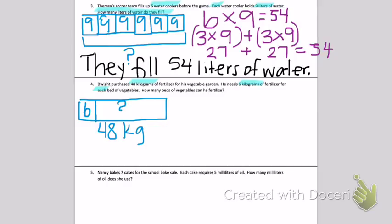That means I am missing how many groups I need. So I'm going to do a division problem. Let me change colors quickly. So I'm going to do a division of 48 kilograms divided by 6 kilograms.